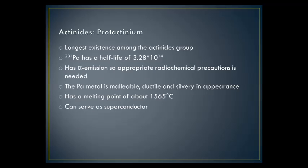Protactinium has been in existence longer than any other actinide. ²³¹Pa has a half-life of 3.28 × 10¹⁴ years, which allows it to make chemical study feasible. It has alpha emission, so appropriate radiochemical precautions are required. The Pa metal is malleable, ductile, silvery, and has a melting point of about 1565°C. It is also a superconductor.